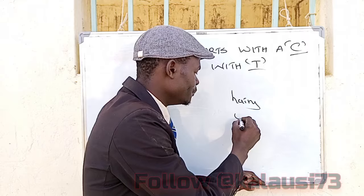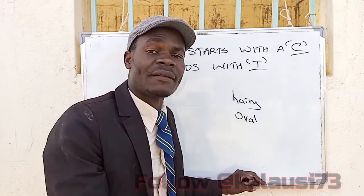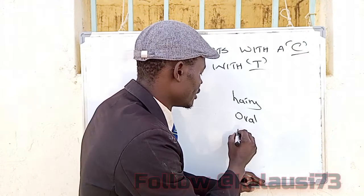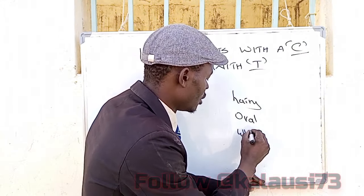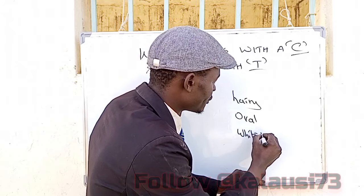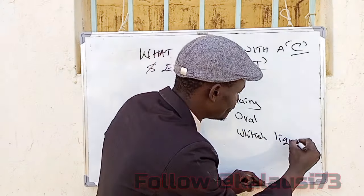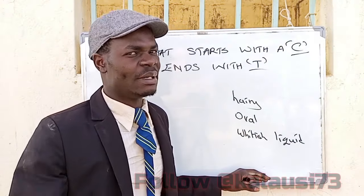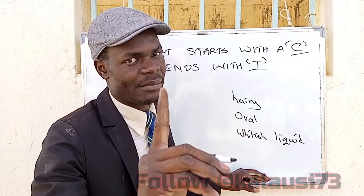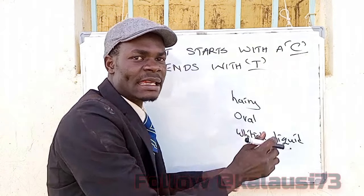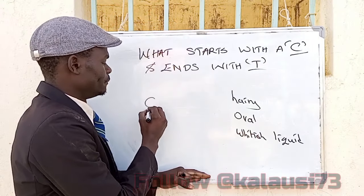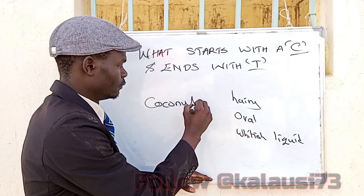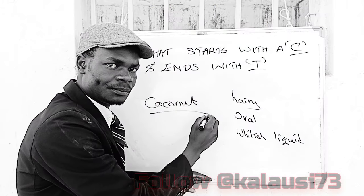oval; and third, it has whitish liquid. What is it? Please stop having a bad mindset — pay attention. This thing is a coconut, yeah!